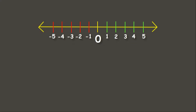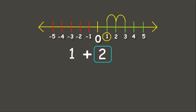Let's try our first example. We have here positive 1 plus positive 2. I know that you already know the answer to this, but let me show you how to solve this using our number line. We have positive 1 and we need to add positive 2. Since this is positive, we are going to move 2 times to the right on the number line: 1, 2 — and that is 3. Therefore, our answer is 3.